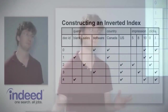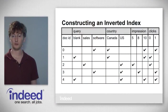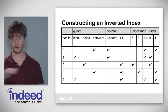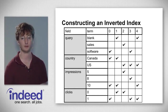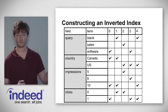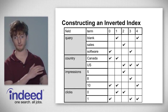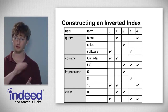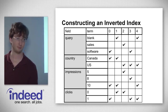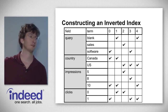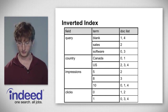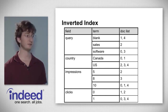The next step in constructing an inverted index — this is the actual inversion — is we flip the rows with the columns. Now we have the fields across the top, the doc IDs down the side, and we just flip that around. So now we've got our fields and their terms, and for each term we have some docs. The last step is compressing that set of docs into a sorted list of docs.